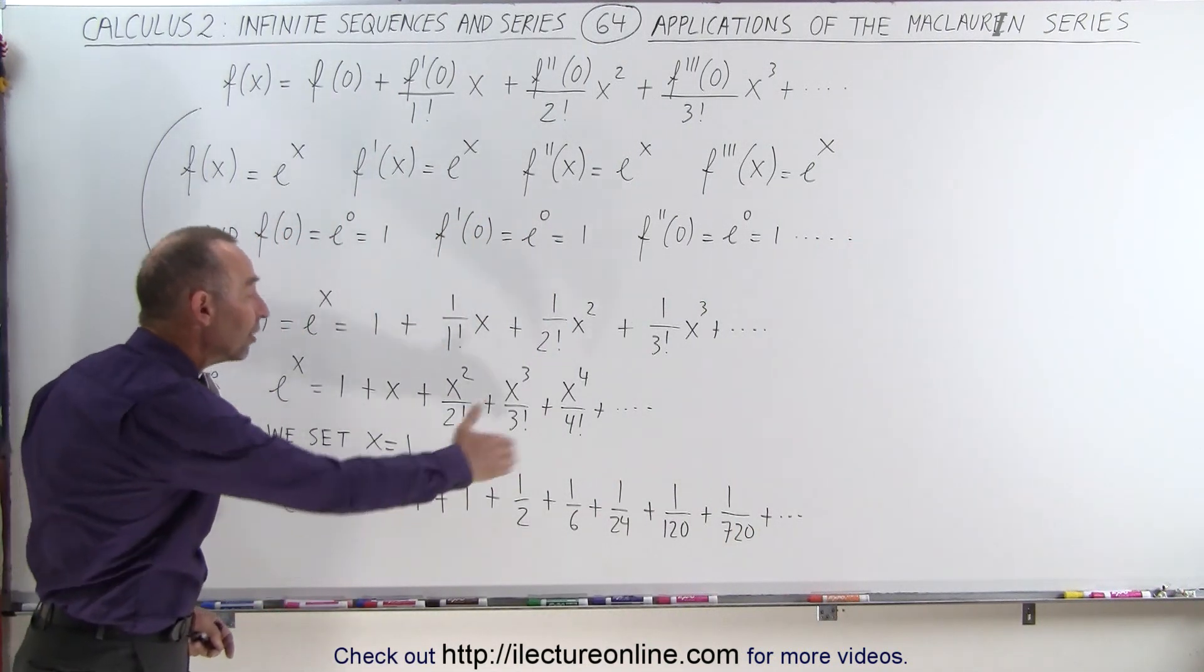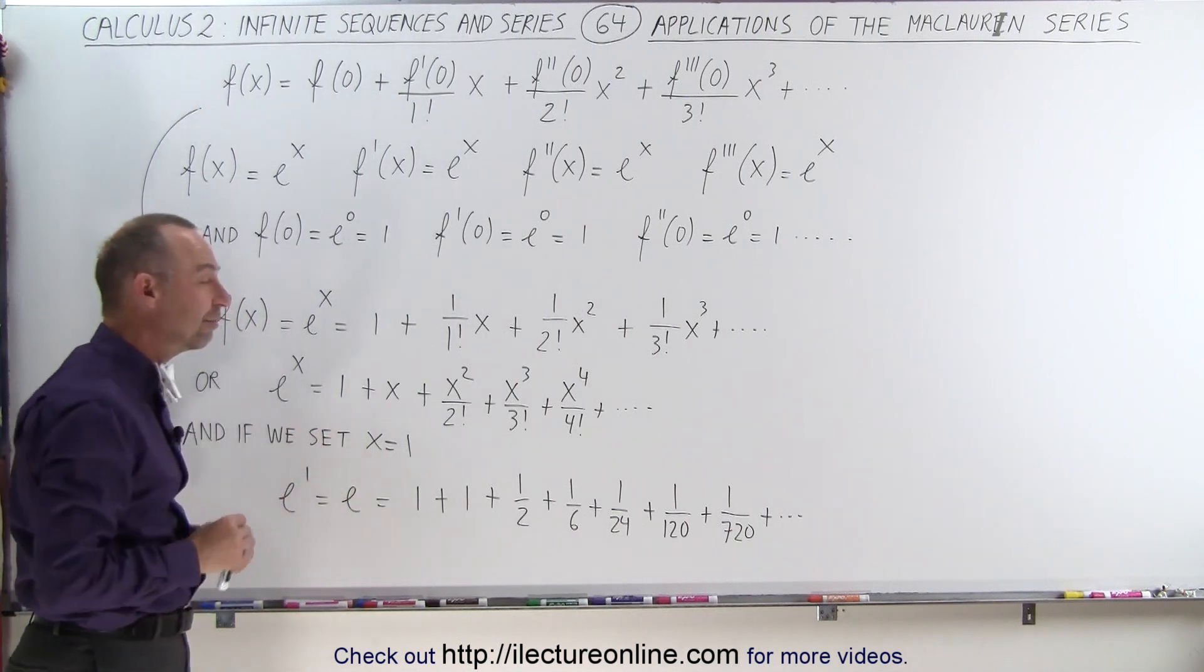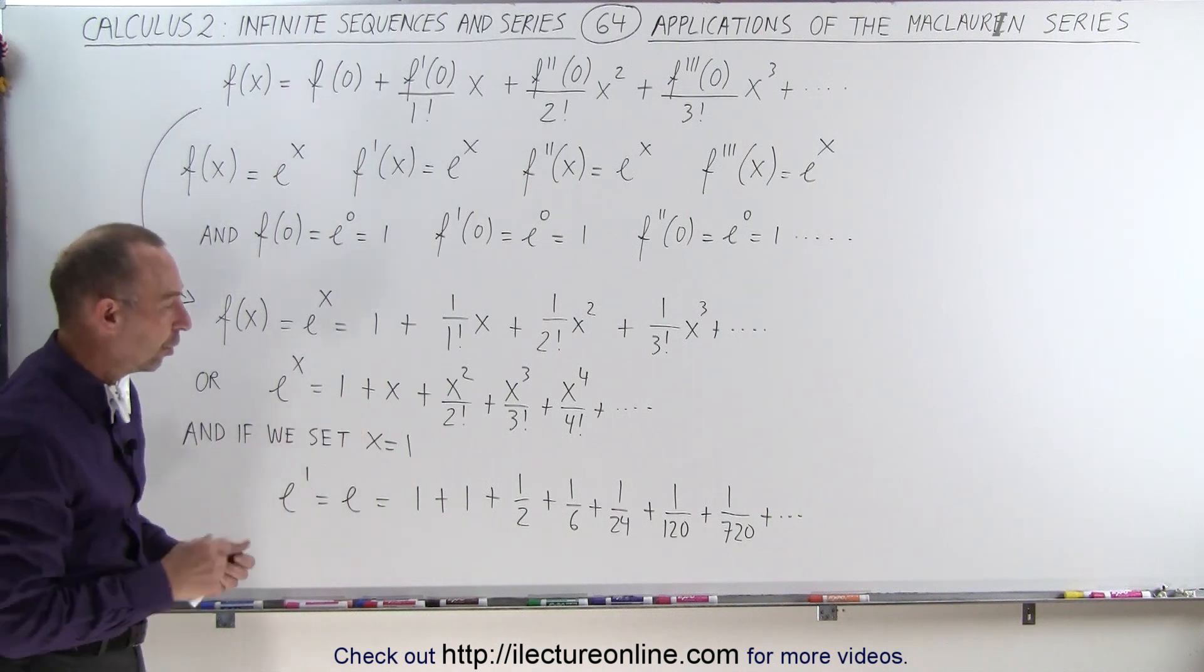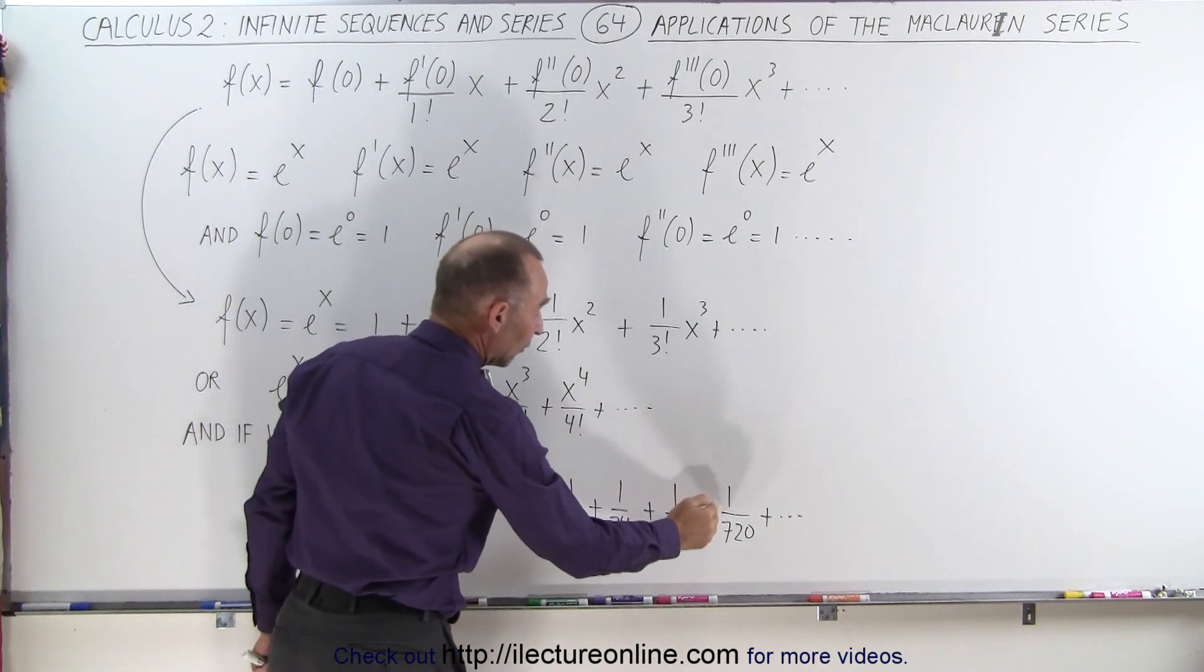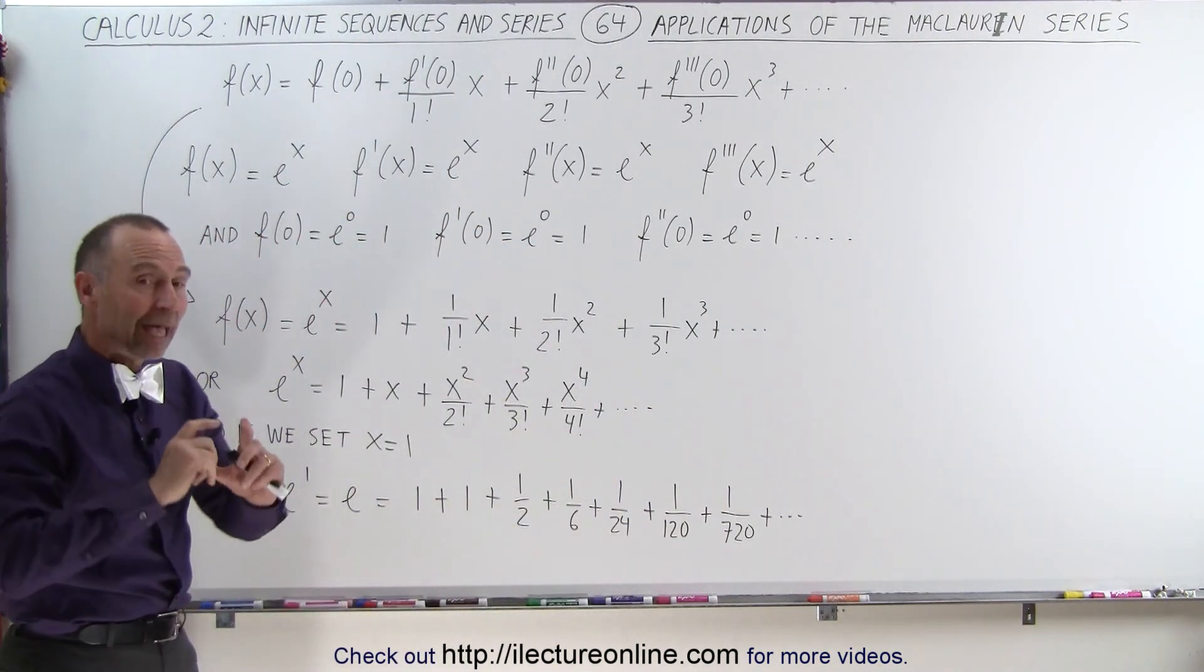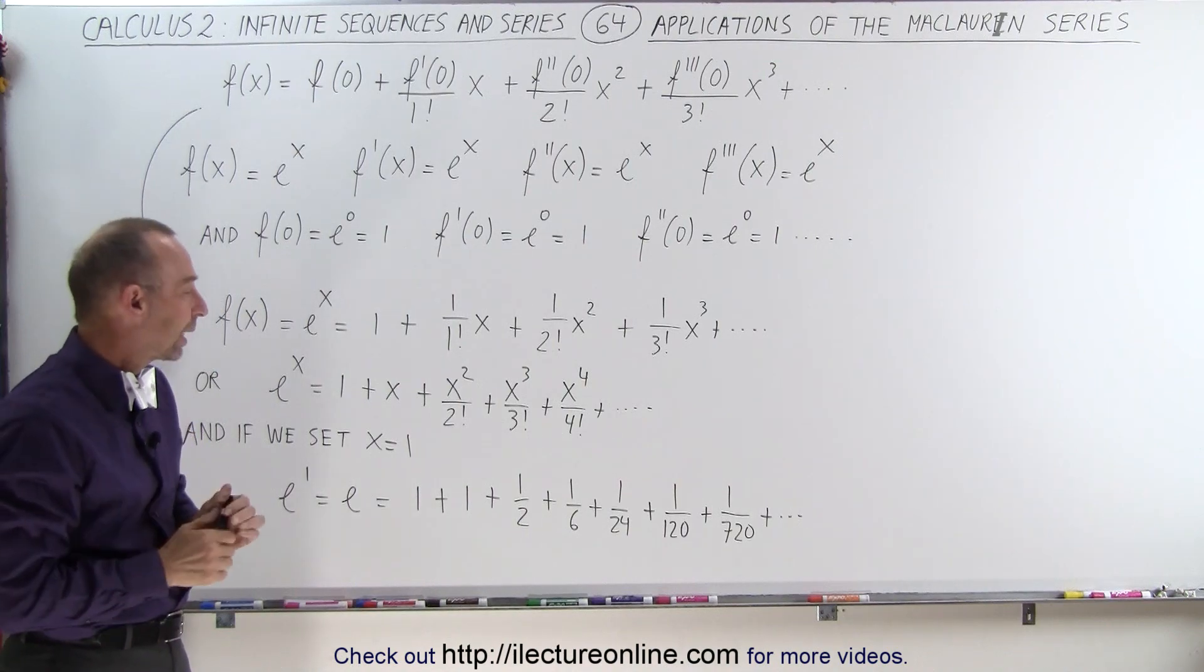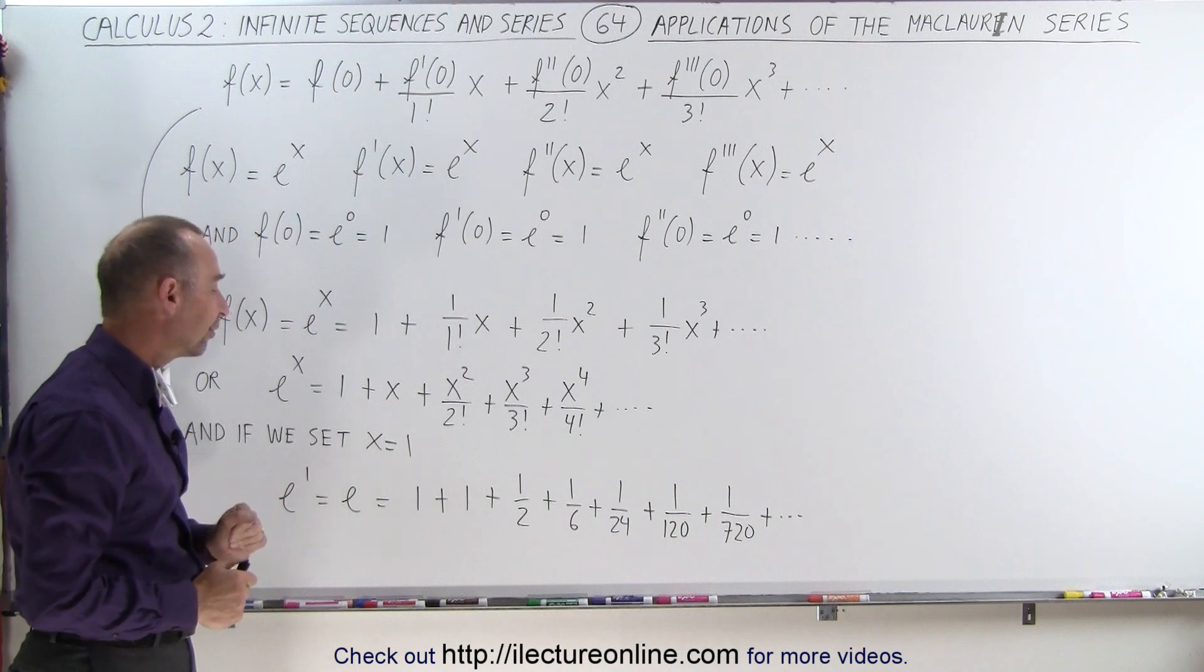And if we add up all these terms in the infinite series, we get the exact value of e. Or if you only need it to a certain number of decimal places, you only need a certain number of terms. Now notice that since we have factorials in the denominator, they grow very quickly. As the denominator gets very large very quickly, the value of each term gets smaller very quickly, and it doesn't take as many terms to get a reasonable value for e.